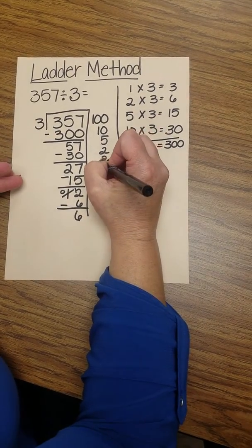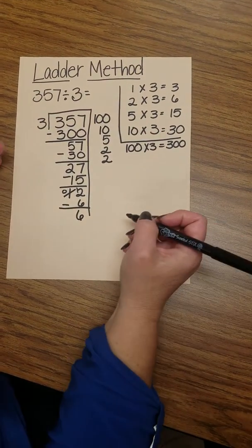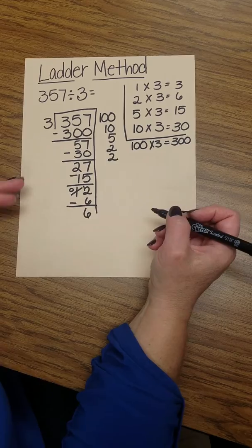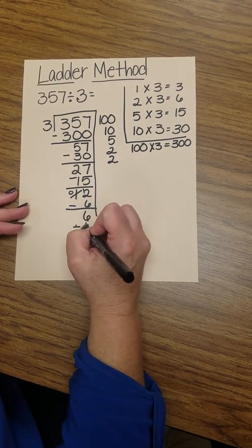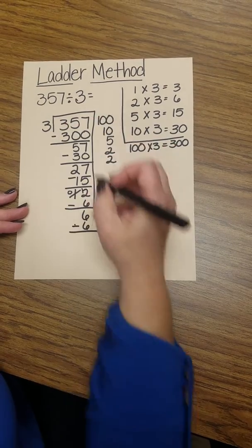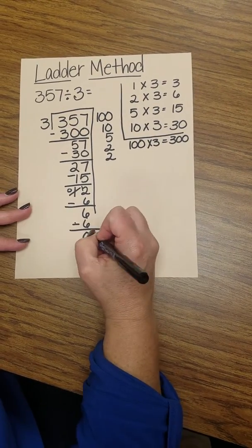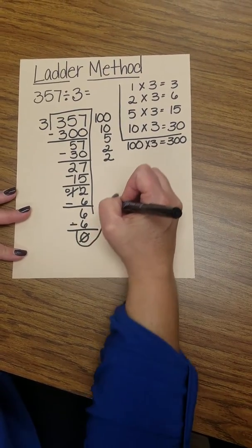So I'll use that 2 again. It's important to know I can use the same tool over and over again. So I'll just subtract the 6 because 2 times 3 is 6. Then I end with 0, so my work is done.